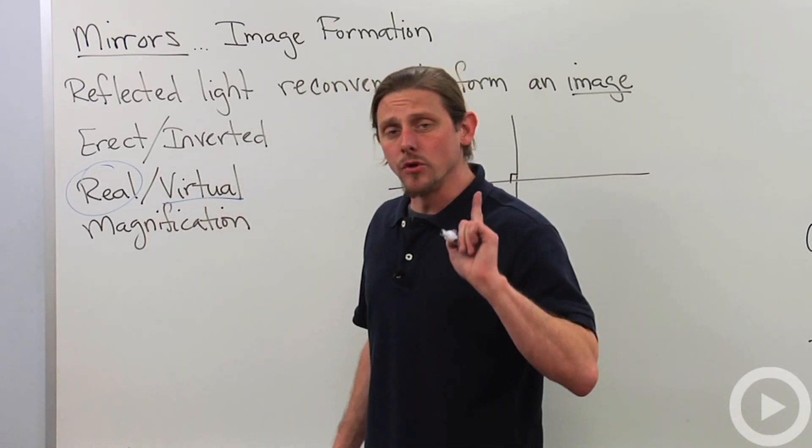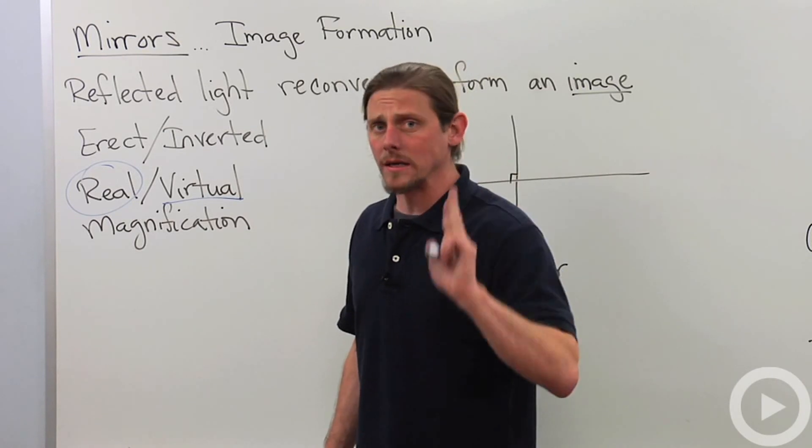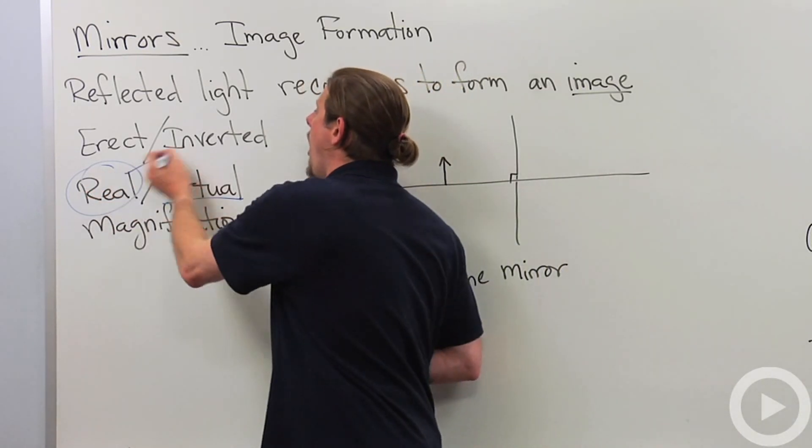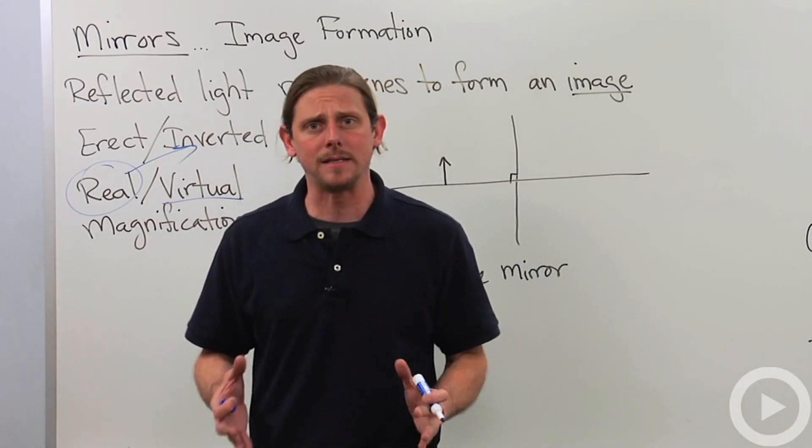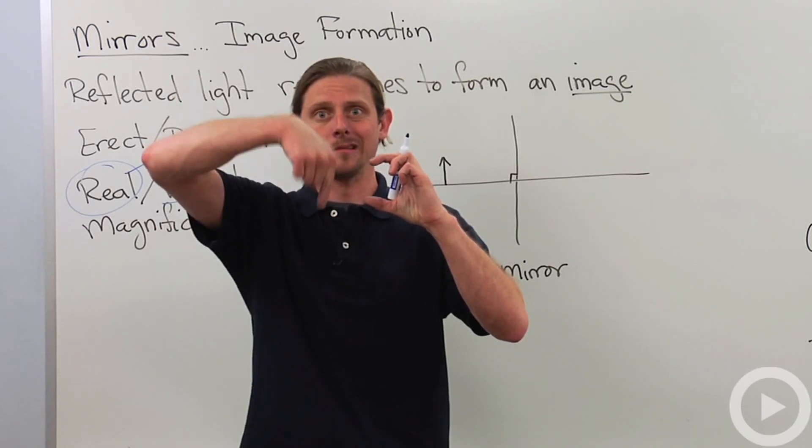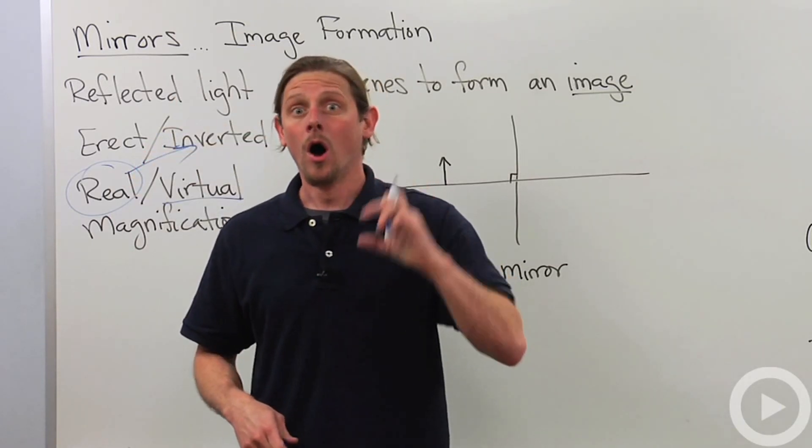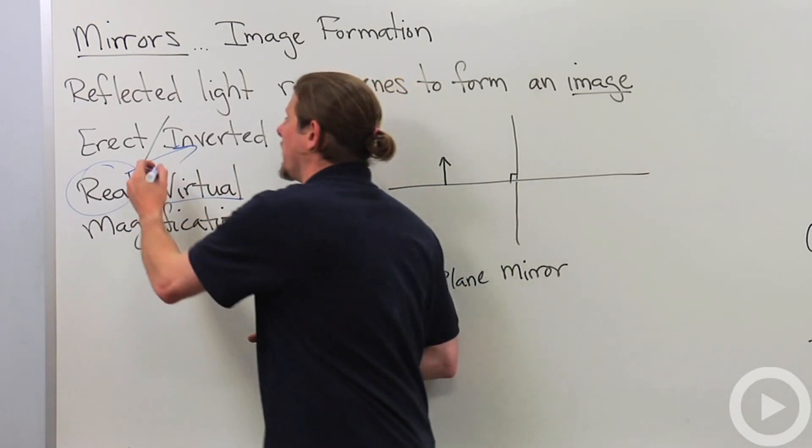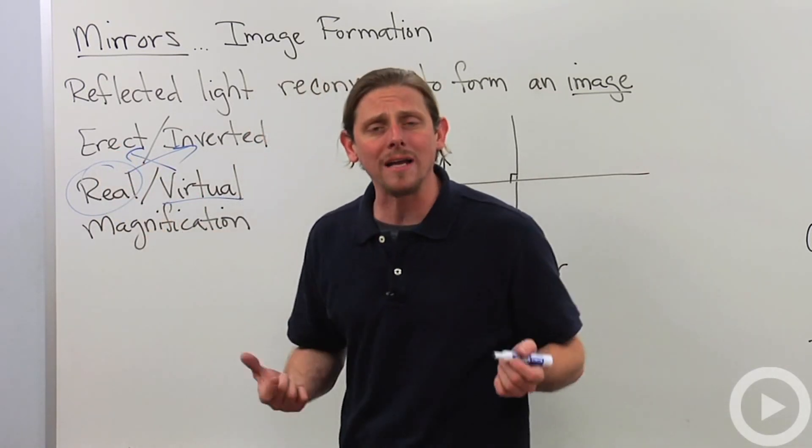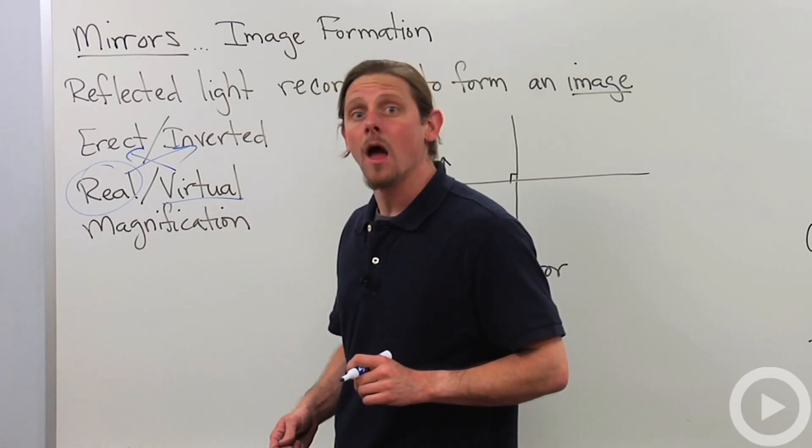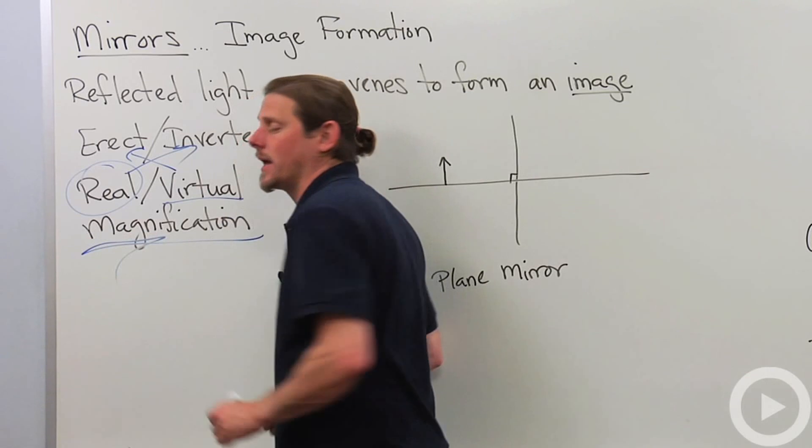If on the other hand it just looks like there's an image and in fact the light never reconvened at all, then that image will be called virtual. We'll find that if you use only a single mirror or a single lens, then real images are always inverted, meaning they're always upside down. Virtual images on the other hand will always be erect or right side up. Then of course we can have magnification.